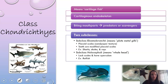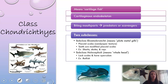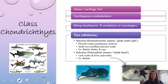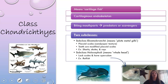On to class chondrichthyes. The name itself means cartilage fish. They have a cartilaginous skeleton — they don't have bones, they have cartilage — but they do have these really elaborate biting mouth parts and they're typically predators or scavengers. There are two subclasses: first is elasmobranchii, which means plate metal gills — these are all of your sharks, skates, and stingrays — and then subclass holocephali, which means whole head, and this is just ratfish. These are kind of your stepping stone to a future bony fish because they do have an operculum, however they lack scales. So they have some connections to early ancestral fish like the hagfish, but also connections to the bony fish.